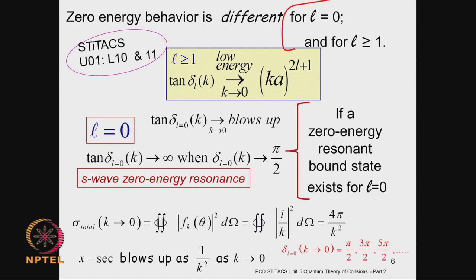The cross section goes as 1/k² and the phase shift will be either π/2 for the resonant case, or 3π/2, 5π/2 — it is not an integral multiple of π in this case, but goes in steps of π/2 depending on how many bound states the potential holds. The fact that there is an attractive potential does not mean you will have a bound state, because the potential must be sufficiently strong to have a bound state solution. The potential being attractive is a necessary condition but not a sufficient condition.